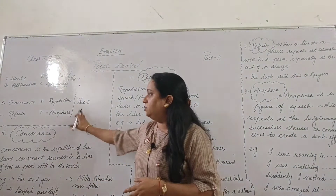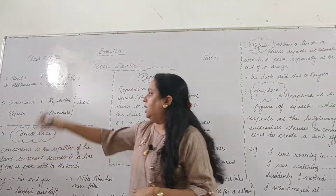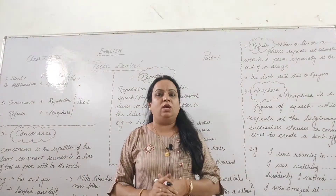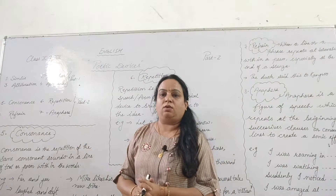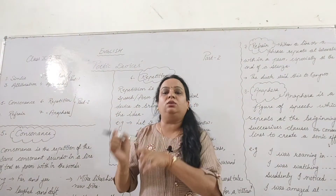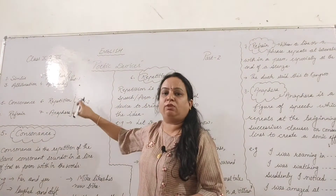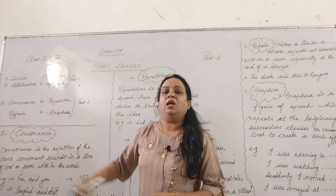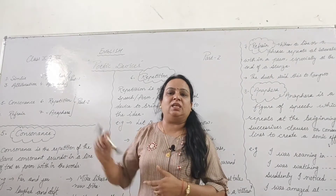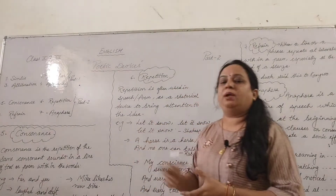Dear students, the poetic devices we will do today are all about the repetition of something. In the previous video, alliteration was the repetition of consonant sounds at the beginning of words, and resonance was the repetition of vowel sounds within words. These poetic devices we take today are also forms of repetition — but what is repeated differs in each.